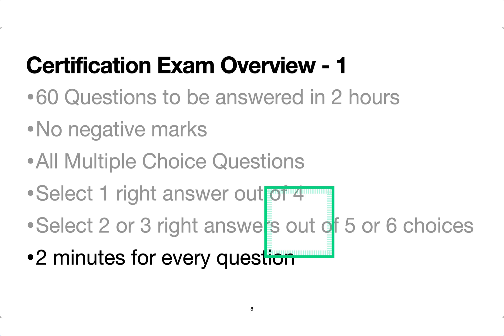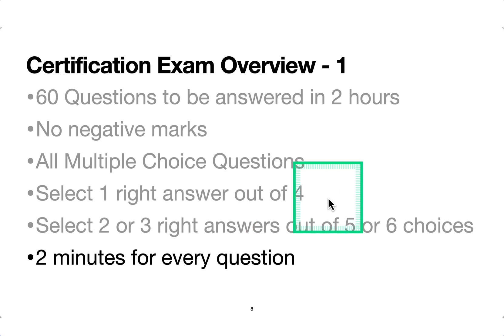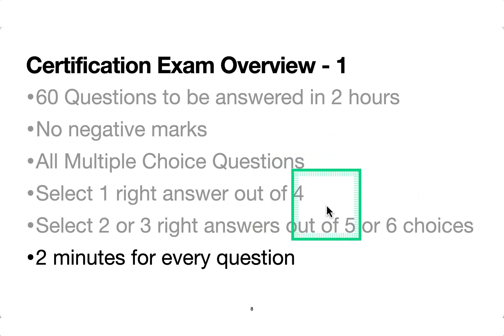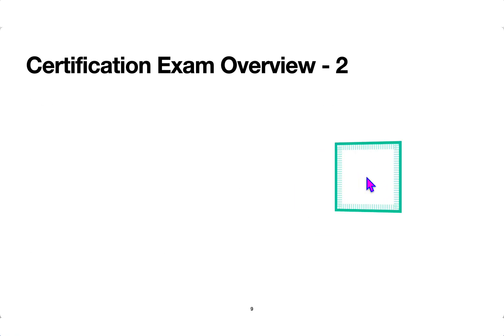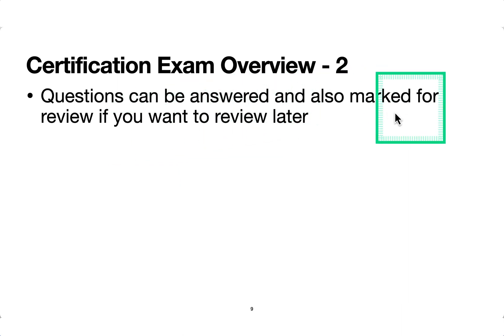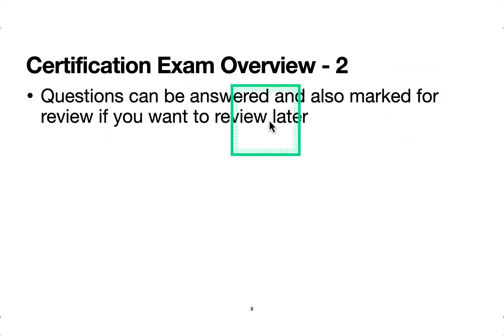As the exam is progressing, you'll clearly be able to see from the very beginning how many total questions there are — like one of 60, two of 60 — and there'll be a timer ticking on the same page. So you can judge your speed as you go. Questions can also be answered and marked for review if you want to revisit them later.